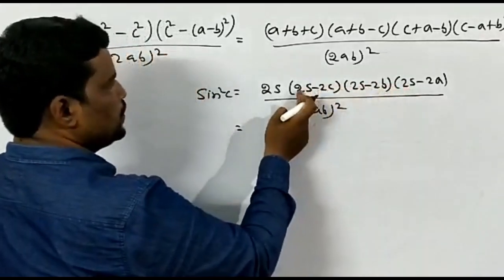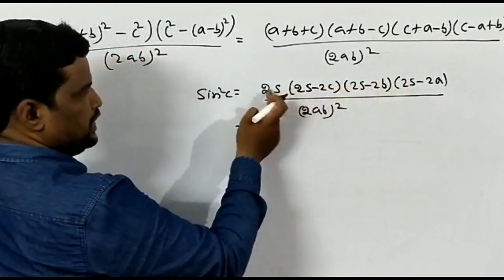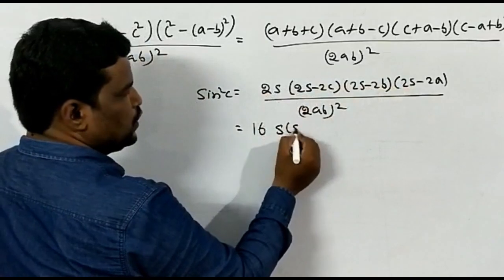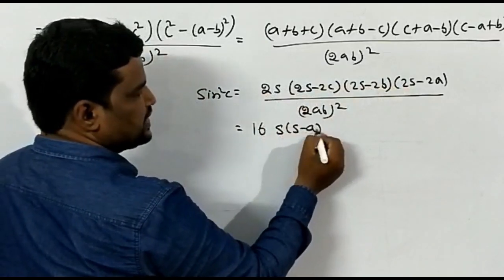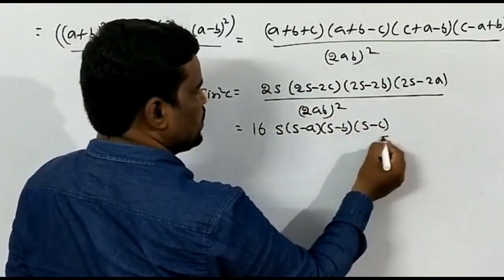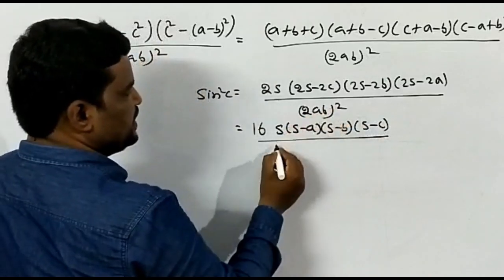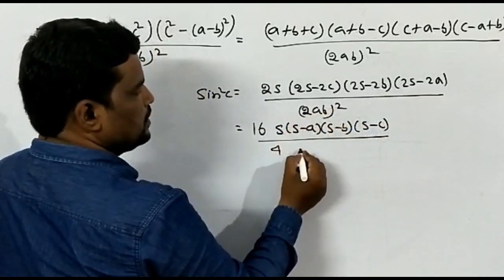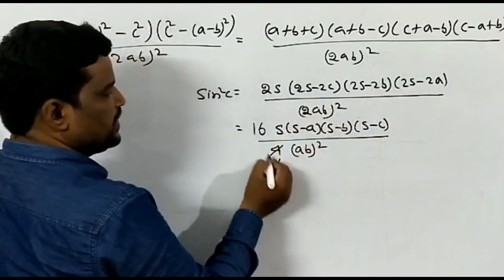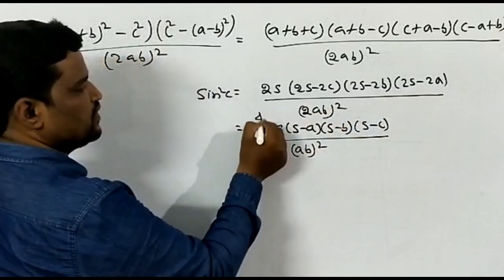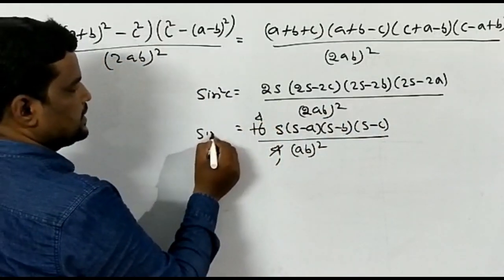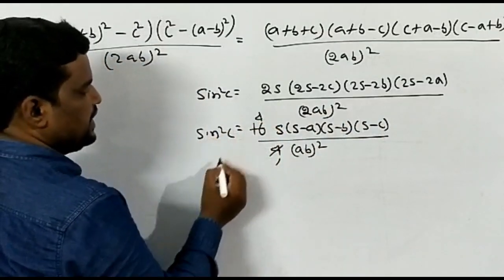Factoring 2 out from each of the four numerator terms gives 2⁴ = 16. So: sin²C = 16·S(S−A)(S−B)(S−C) / 4A²B². Simplifying, sin²C = 4·S(S−A)(S−B)(S−C) / (AB)².